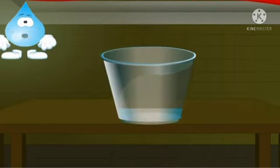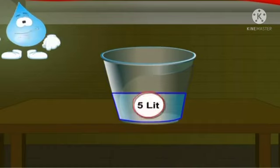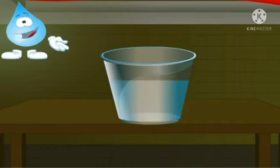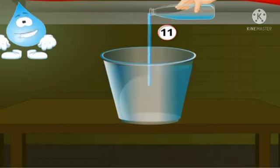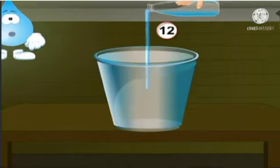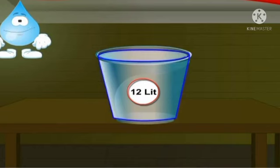5 one litre bottles of water were poured into this bucket. The volume of the water in the bucket is 5 litres. Now children, let's find out how much more water can be added to fill this bucket completely. This bucket can hold 10 litres of water. It means that the capacity of this bucket is 12 litres. From this activity,